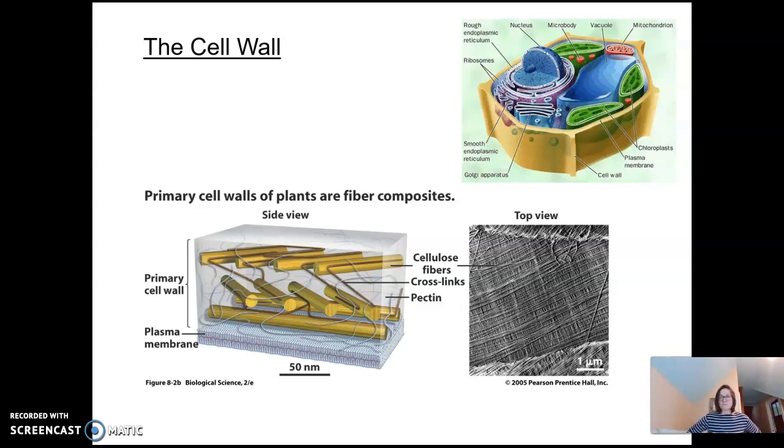The cell wall is excreted from the cell and it's just outside the membrane. So in this picture in the top right-hand corner, we see it as just a thick substance like a piece of cardboard. But when we look closely, of course, we see that there are details to it. Now there are primary cell walls and secondary cell walls found in plants. Primary cell walls of plants are fiber composites. Here is our plasma membrane. If you look closely, you can see those phospholipid tails and it's a bilayer.